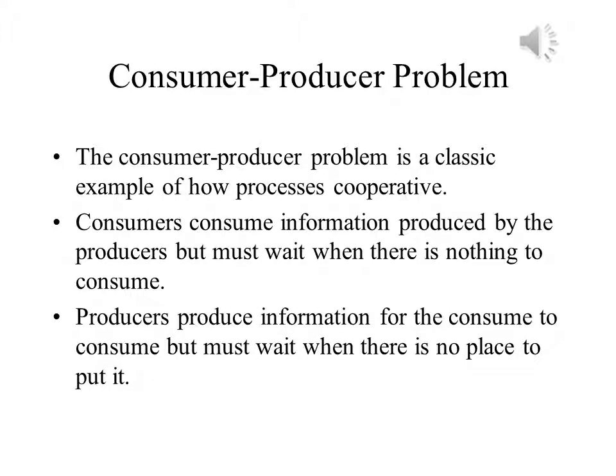One classic example of concurrent processes that cooperate is the consumer-producer problem. In this problem, the consumer consumes whatever is available, but if there is nothing there, it has to wait until there is something to consume. While the consumer is busy consuming or waiting, the producer is producing. But if there is no place to put its product, the producer can't produce any more. In that event, it has to wait until the consumer has done some more consuming before it can continue.